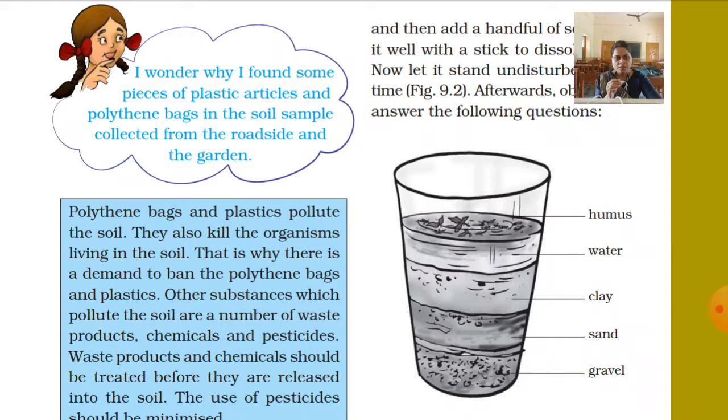Humus means these are decomposed or decomposing dead organic matters. These are parts of living beings - dried leaves, parts of plants, or parts of any animal that are in the soil and have died.